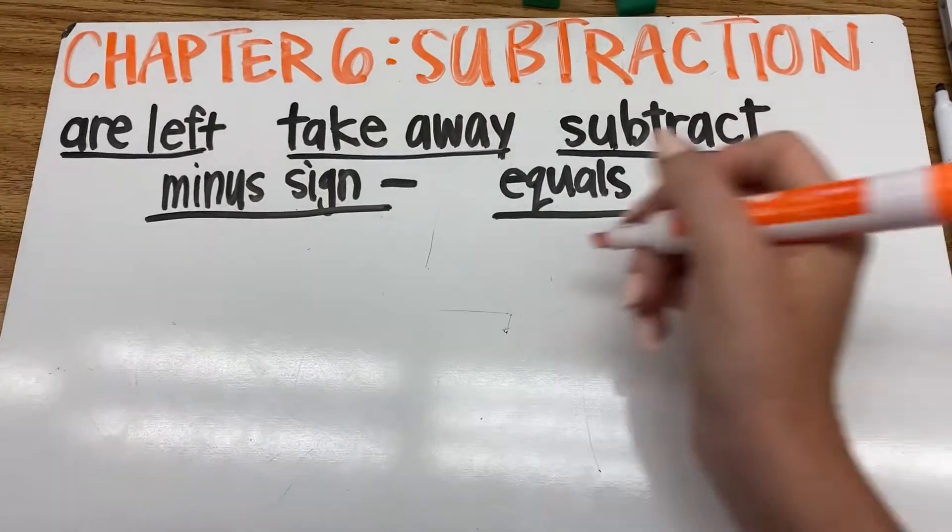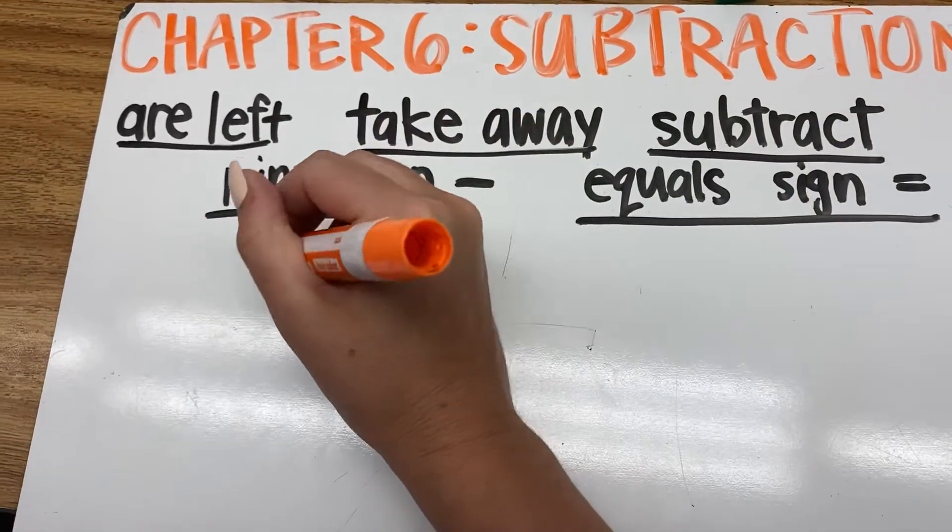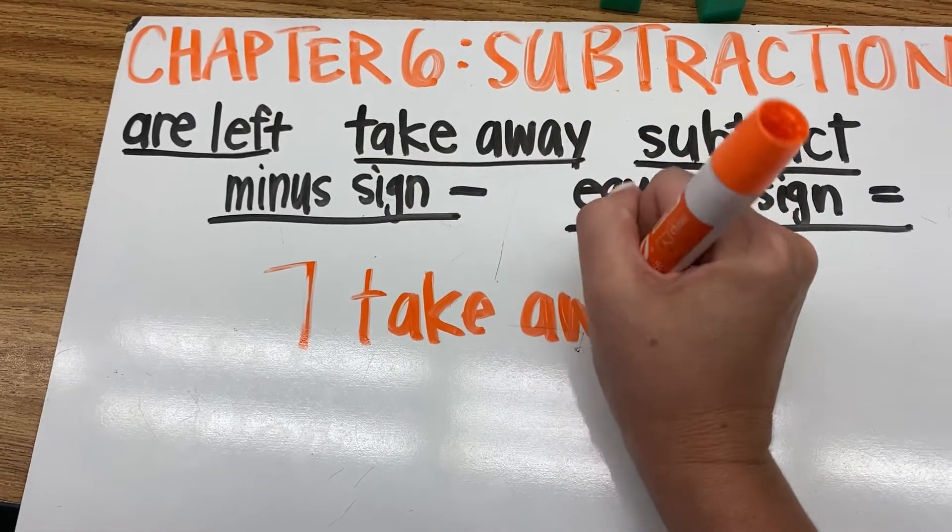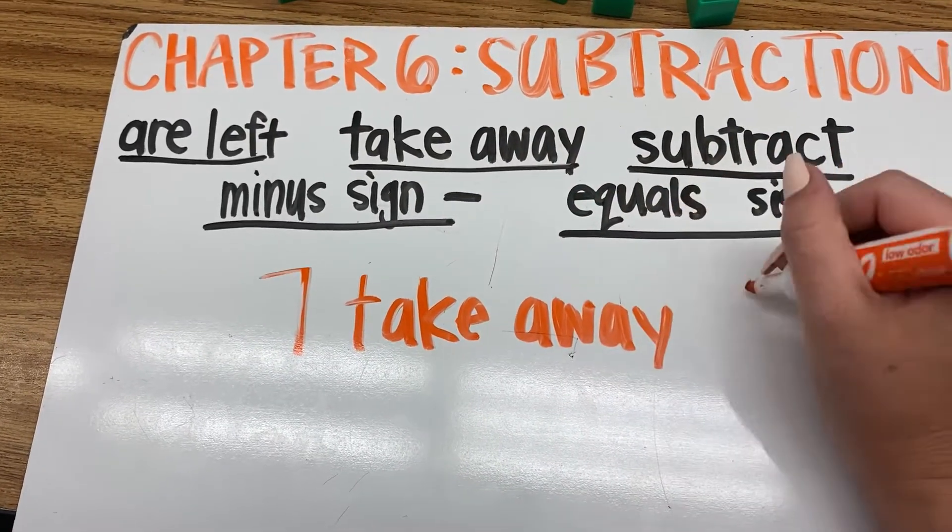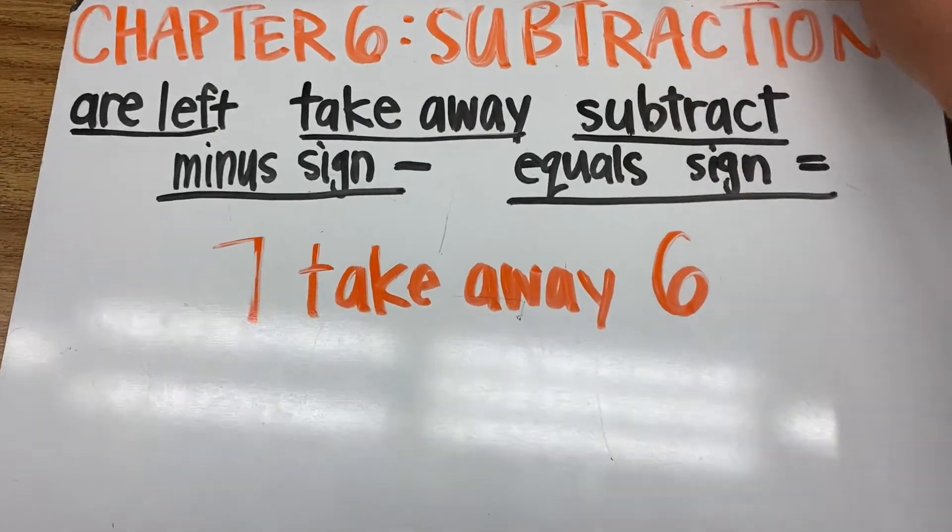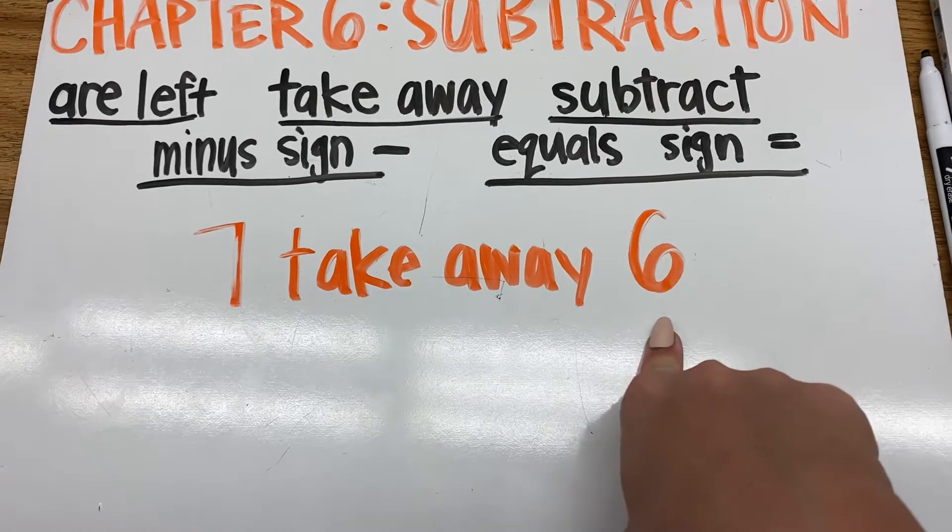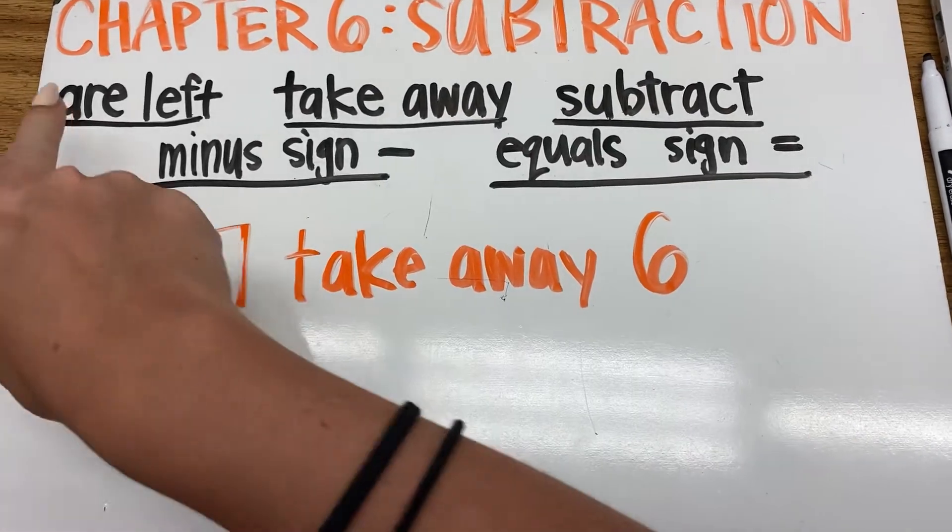So I am going to write a little scenario. I'm going to write seven, take away six. So how could I model seven, take away six? And how would I figure out how many are left?